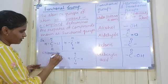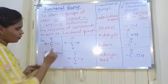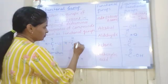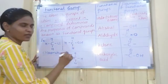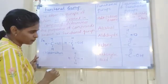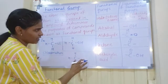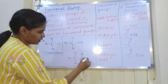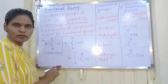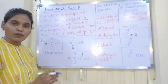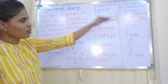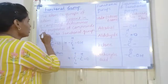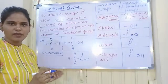Now if we substitute one of the hydrogens by –OH, it becomes an alcohol — that is methanol. If we substitute the hydrogen by –CHO, this compound is transformed from methane to an aldehyde. So you can see how when these functional groups are present in an organic compound, the functional group determines the properties of the compound.